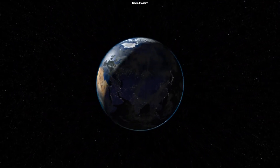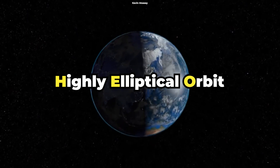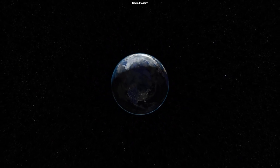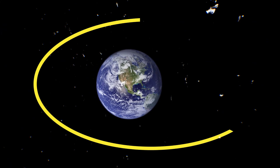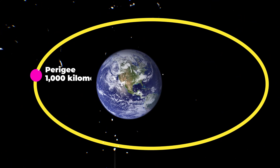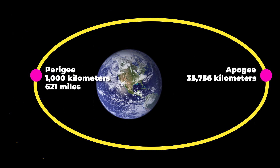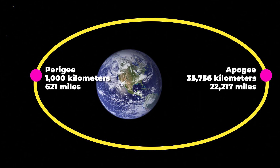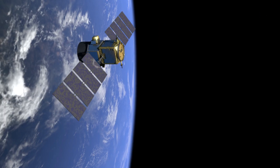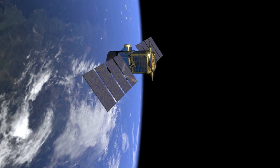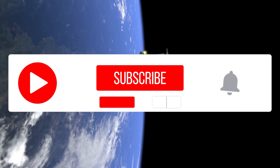And finally, we have the highly elliptical orbit, or HEO, whose shape is oblong, meaning it comes very close to Earth and then moves farther away. HEO has a low perigee altitude of under 1,000 kilometers (621 miles), and a high apogee altitude of over 35,756 kilometers (22,217 miles). Satellites in this orbit are suited for communications, satellite radio, remote sensing, and other applications.